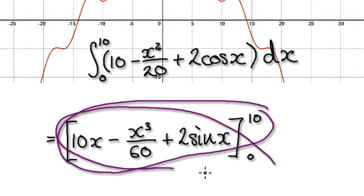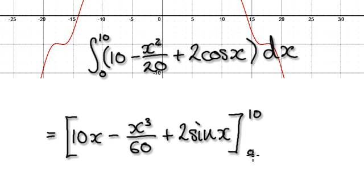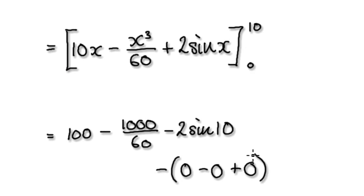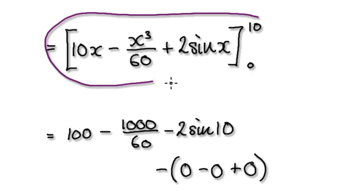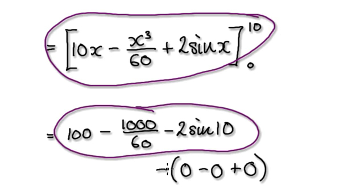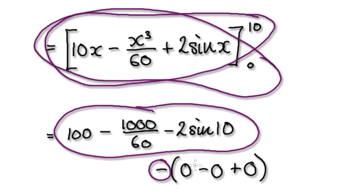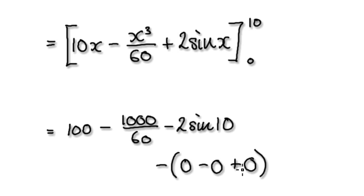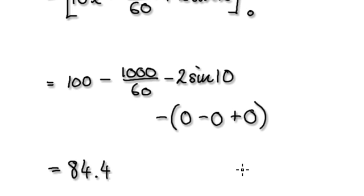Take away this. Okay, so hang on. So now it will be, so this, remember this, which is this bit here. Take away, which is this bit here. And then take away this, which will be 0 minus 0 plus 0 here. So jump to your calculator.